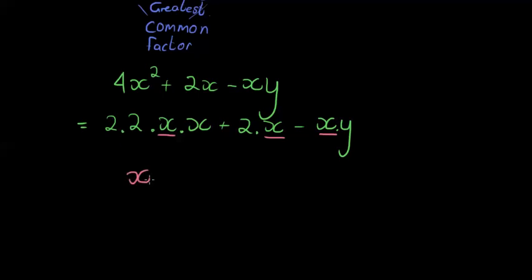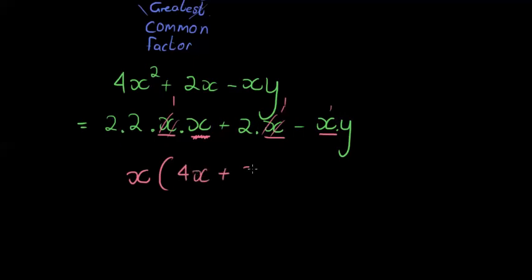We have an x in all three terms. Could we take out x² as a common factor? The last term only has one x, so the greatest common factor for x is just x. Taking out one x: from 4x² we're left with 2 times 2 = 4x; from 2x we're left with 2; and from −xy we're left with −y. So the factorized form is x(4x + 2 − y).